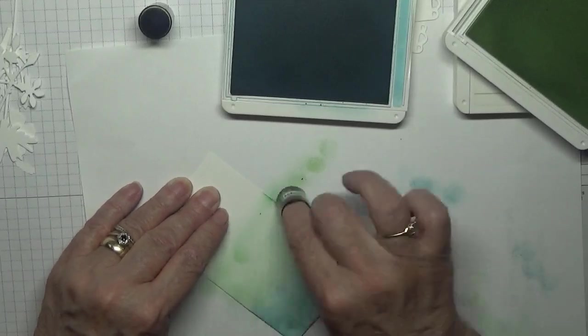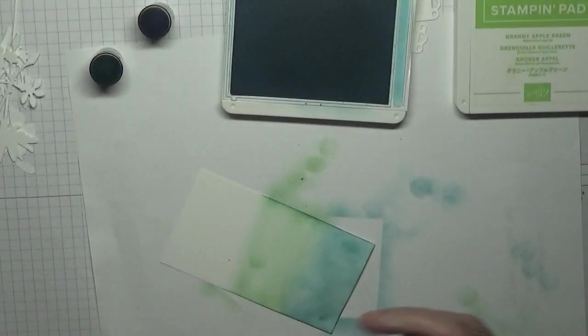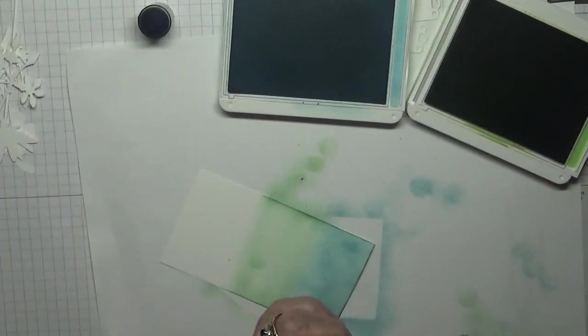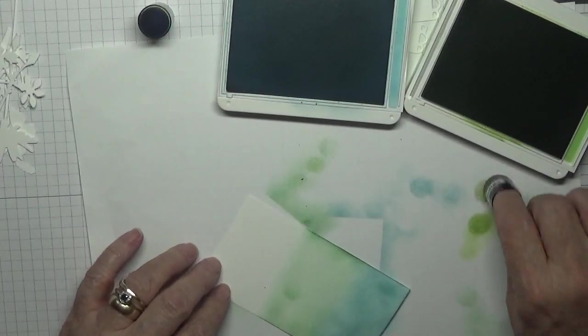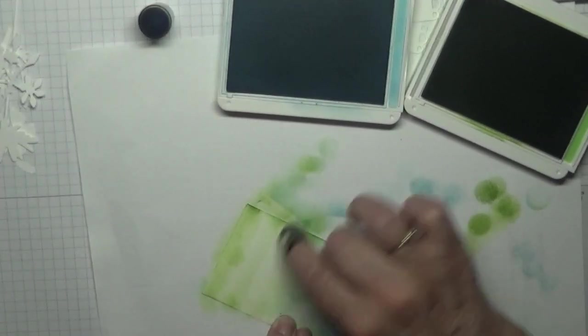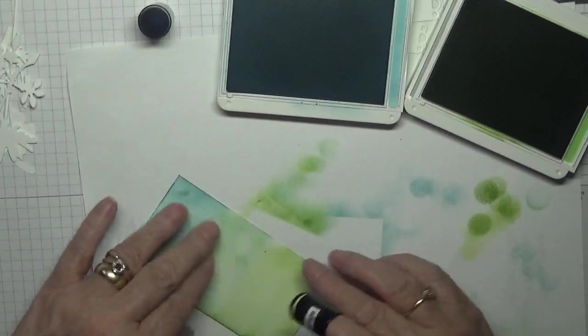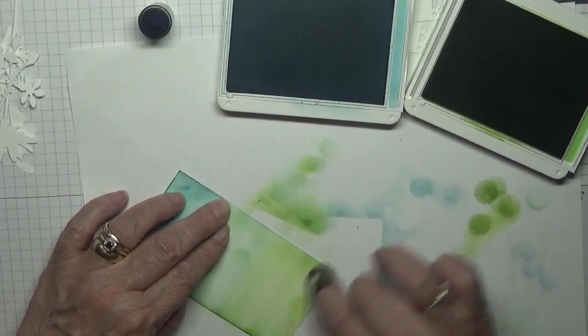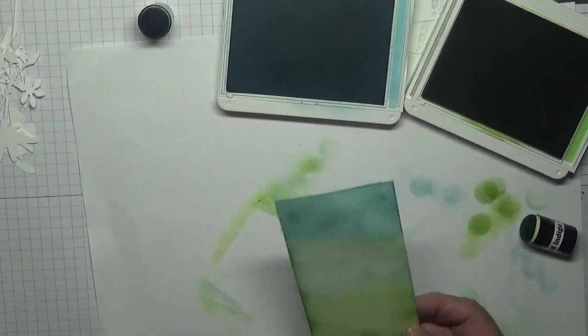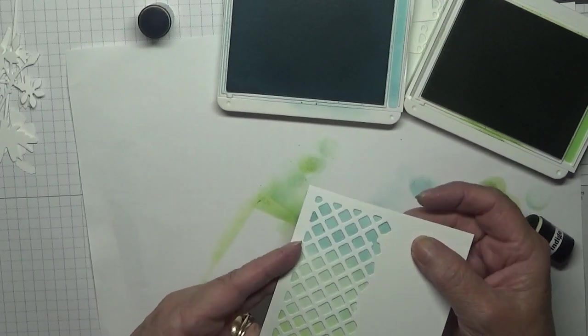And that's about two-thirds. And then we're going to do Soft Seafoam in. Blend that in. And then I'm going to use Garden Green. I'll use the same dauber because it's a green. Blend that in and just go under there.